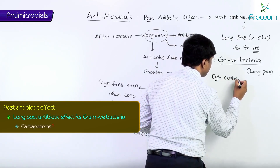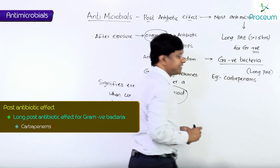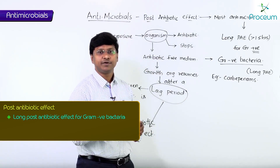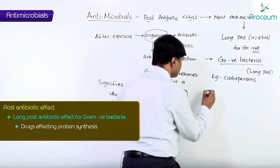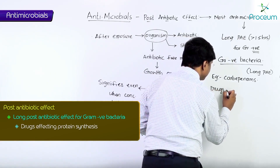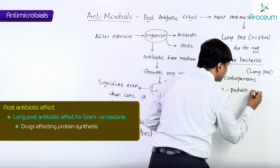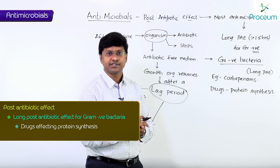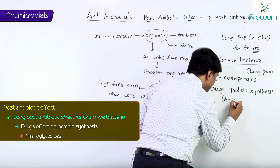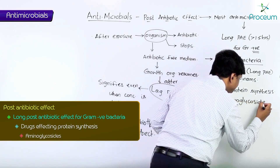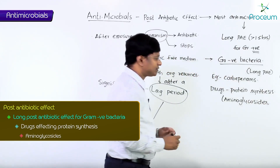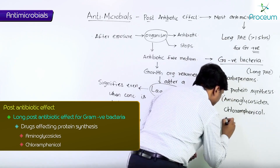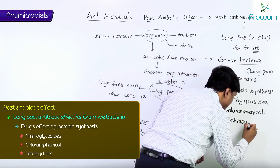The antibiotics with long post-antibiotic effect against gram-negative bacteria include carbapenems — that is imipenem, meropenem, and doripenem. The next group is drugs affecting protein synthesis, which include aminoglycosides, chloramphenicol, and tetracyclines.